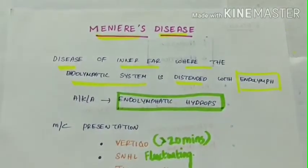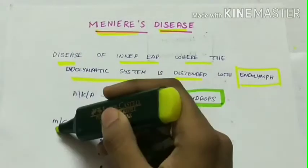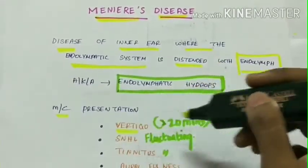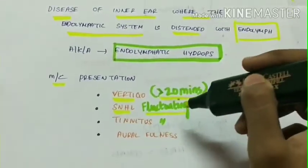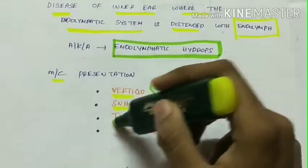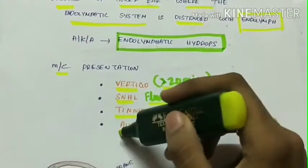Most common presentation of Meniere's disease is vertigo which lasts for more than 20 minutes, sensorineural hearing loss which is fluctuating in nature, and fluctuating tinnitus along with aural fullness.